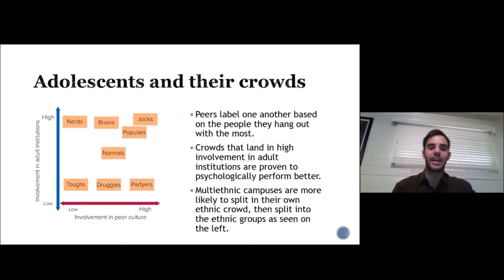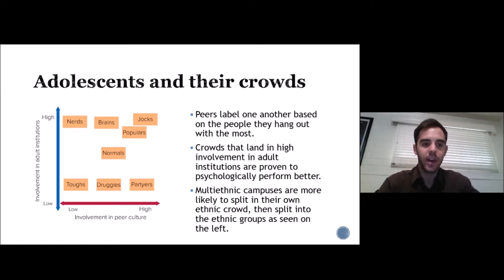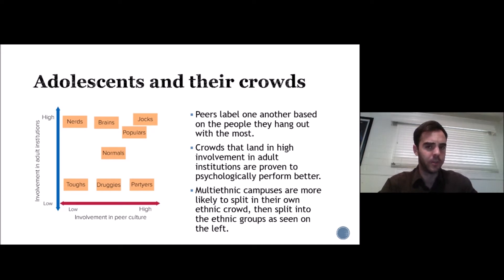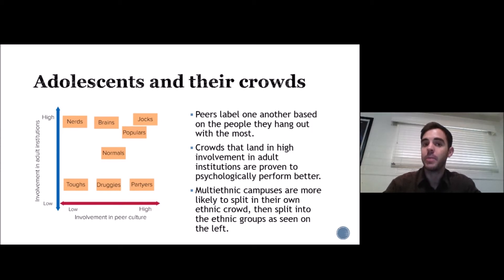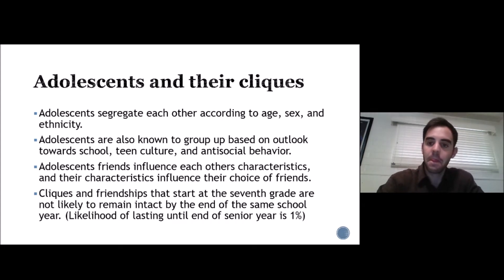We'll learn the difference between crowds and cliques. Crowds include nerds, brains, jocks, popular people, normal people, tough guys, druggies, and partiers. Nerds, brains, and jocks are crowds more likely to go to college or universities, whereas partygoers and popular people are more likely to go to parties, concerts, and other places where peers congregate.